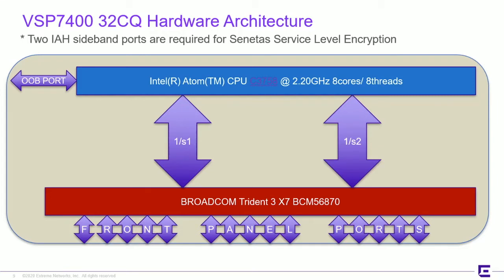Before we go further, let's look at the platform in question — we're going to focus on the VSP 7400-32C hardware architecture. Two IAH sideband ports are required for the Senatus level encryption solution, and as you can see, we have two sideband ports here. I also want to emphasize that the performance of the encryption — i.e., the throughput profile you'll be able to generate — is directly related to the cores and RAM associated, like any other container or virtual machine. On this platform, we've been able to get very close to the theoretical limits of the actual container device.